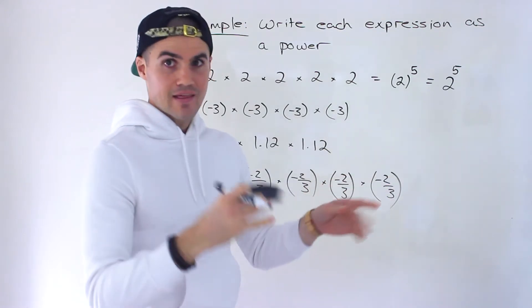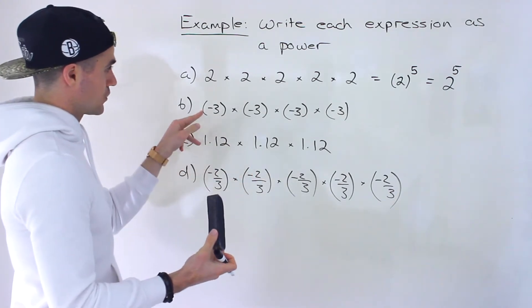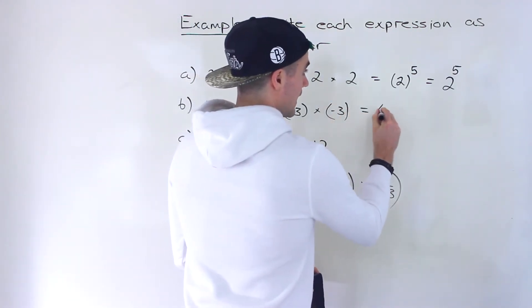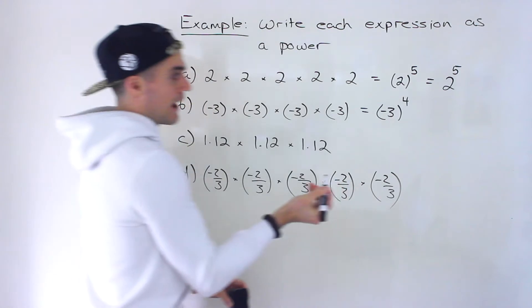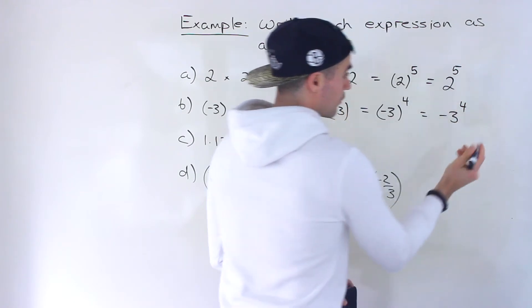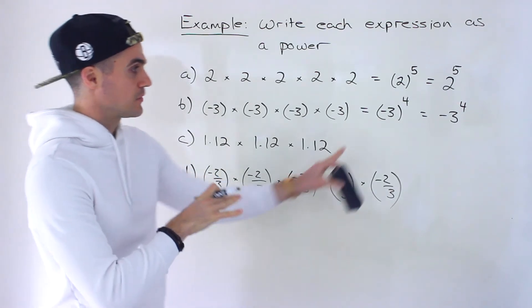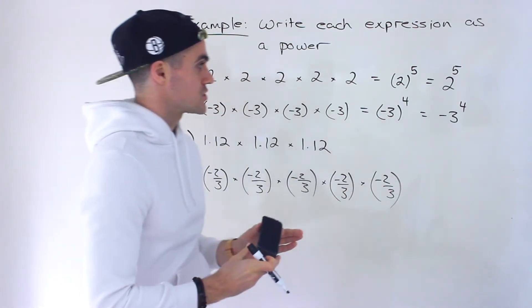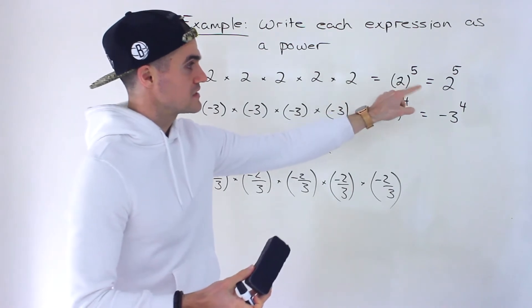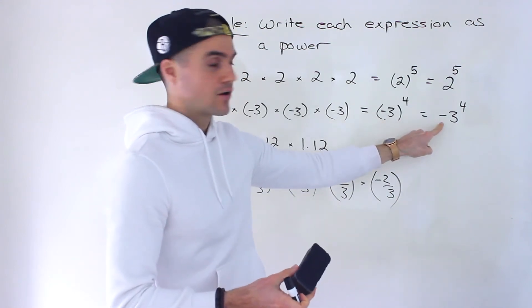I'd recommend getting into the habit of using brackets because when you're dealing with negatives, the negatives matter. For example, here we're multiplying negative 3 four times. You would rewrite this as negative 3 in brackets to the power of 4. You wouldn't write negative 3 to the power of 4 — this and this are actually different. We'll cover that in a different video, but just know that with negatives it's crucial to use brackets. With positives it's not as necessary, because both of those are the same, but negative versions are not.